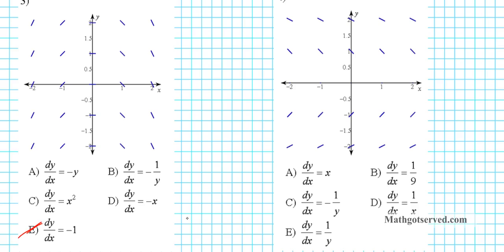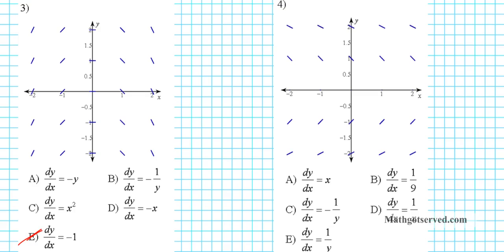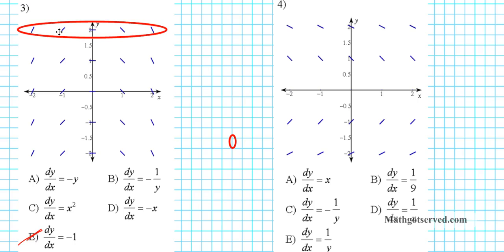Now let's look at the impact each variable has on this slope field. To determine the impact that x has, we hold y fixed. Fixing y at a value of 2, and allowing x to attain multiple values — negative 2, negative 1, 0, 1, 2 — does the variation of x impact the steepness of the tangent line? The answer is absolutely yes. So x must be present in the differential equation.